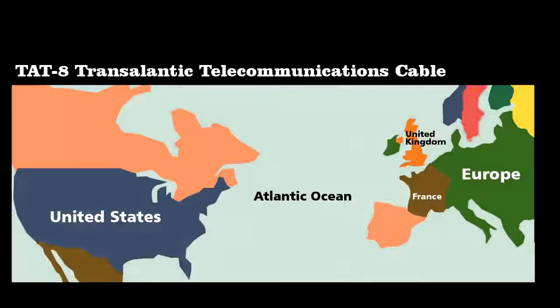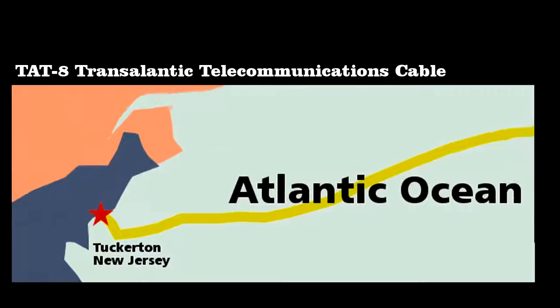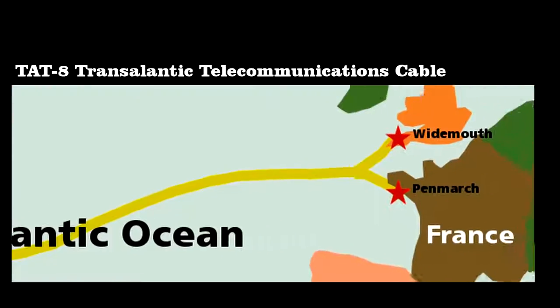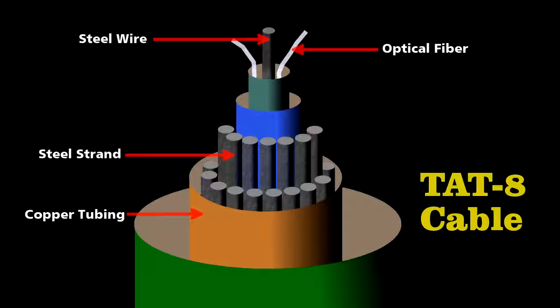One of the greatest engineering achievements was the first ocean-spanning fiber-optic cable. Called TAT-8, it extended from Tuckerton, New Jersey, following the ocean floor over 3,500 miles until branching out to Whitmoth, England, and Pondmache, France.